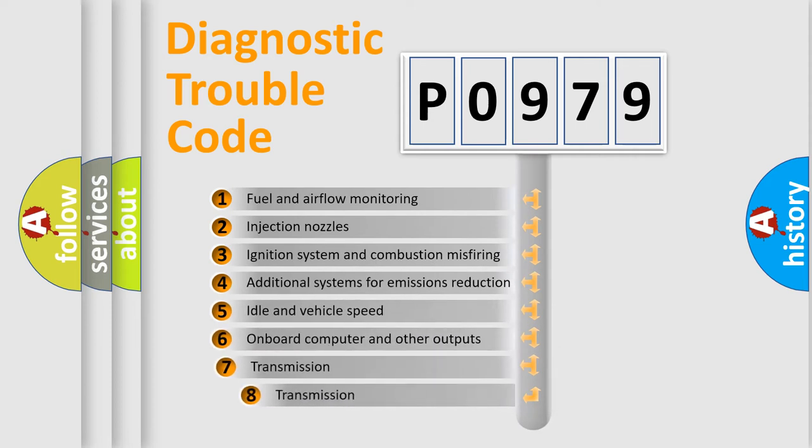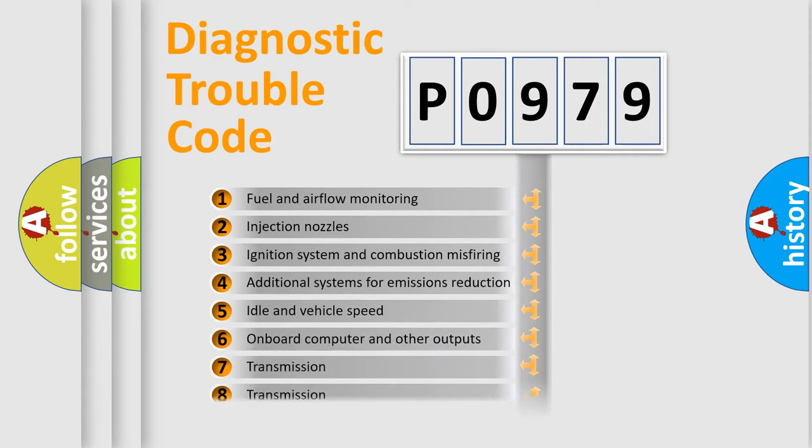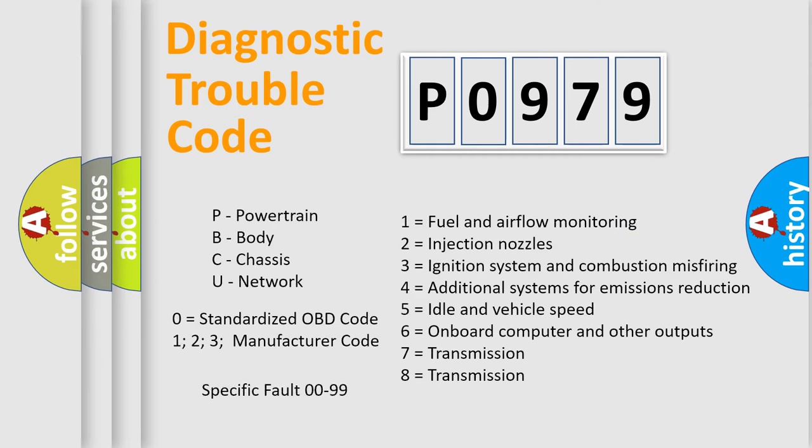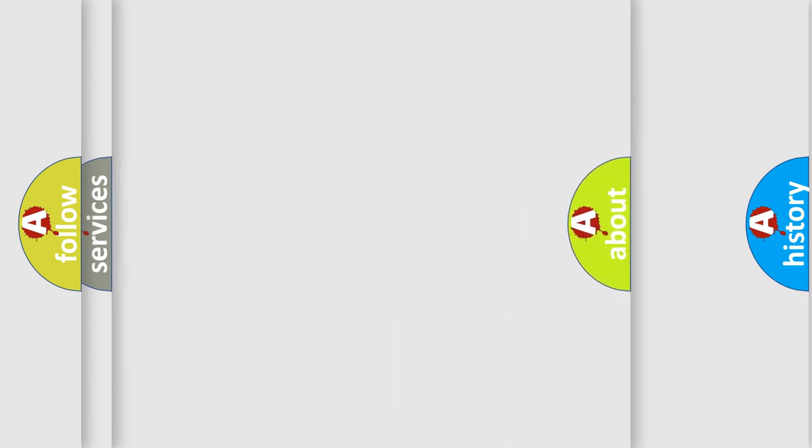The third character specifies a subset of errors. The distribution shown is valid only for the standardized DTC code. Only the last two characters define the specific fault of the group. Let's not forget that such a division is valid only if the other character code is expressed by the number zero.